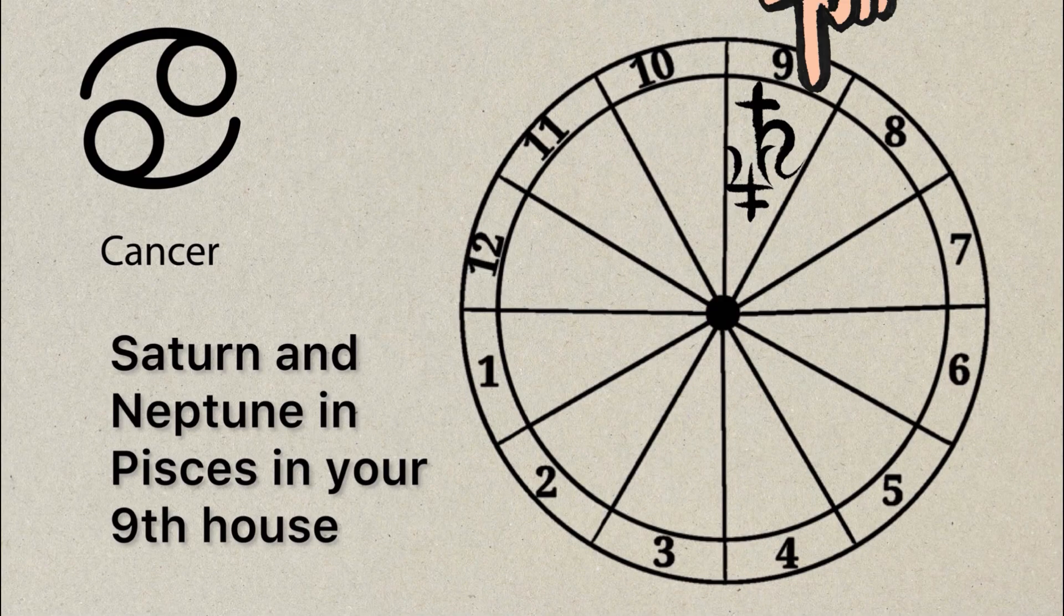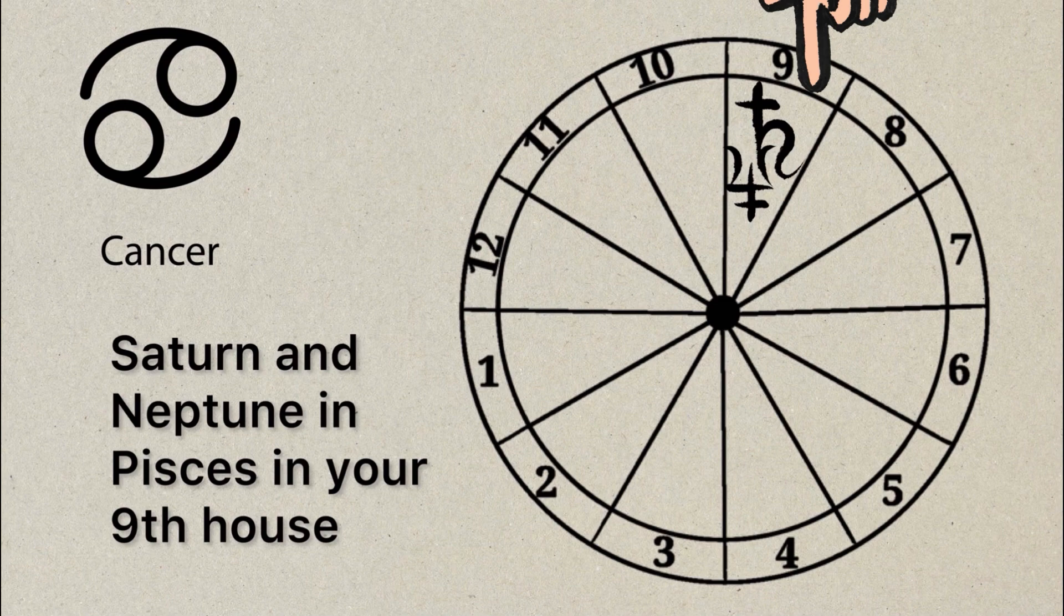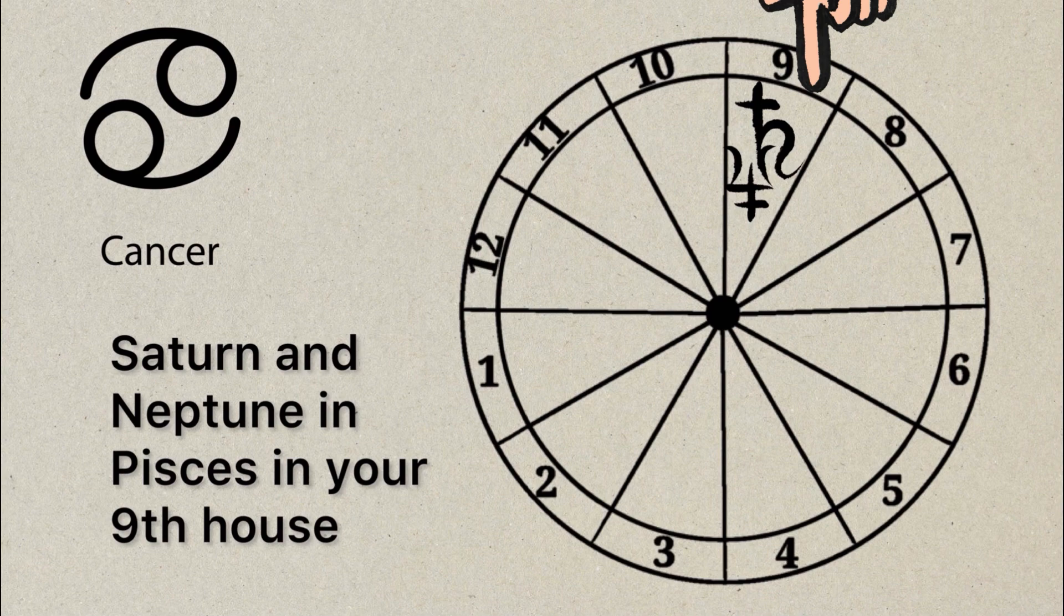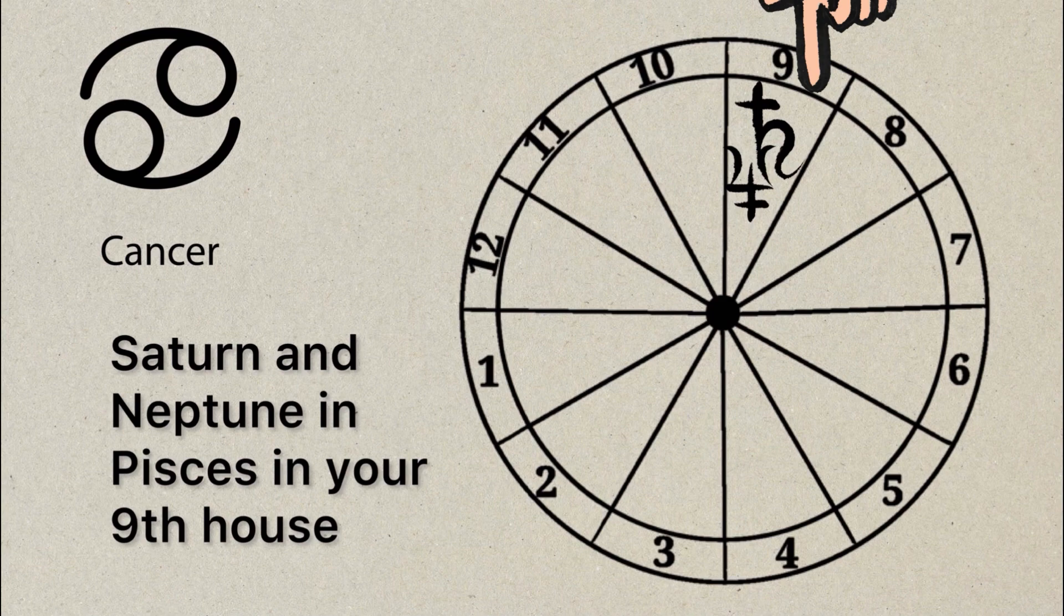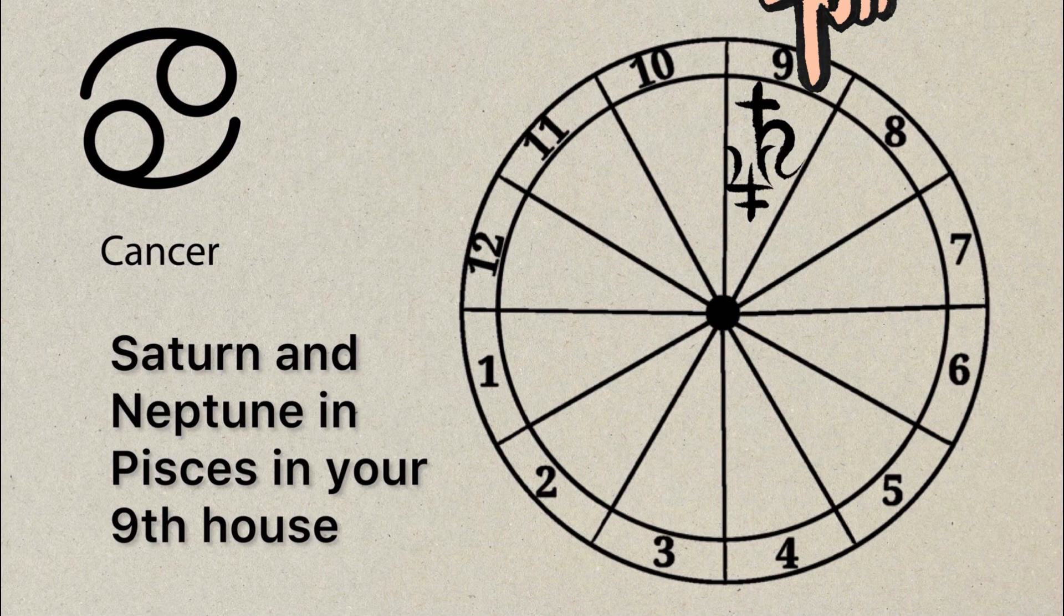You have Saturn and Neptune both transiting your ninth house right now. Saturn is trying to rework the way you identify with social norms, your spiritual beliefs, your political beliefs. Anything that you may believe in, it may make things harder when it comes to school. This is a time when you can identify what you really want to identify with. Change your belief system. You're really working towards changing how you think and feel about everything going on in life.